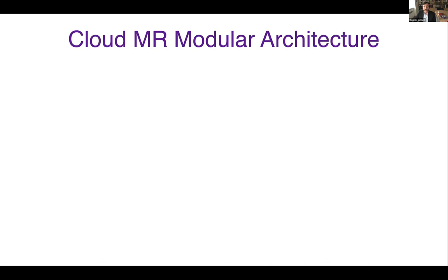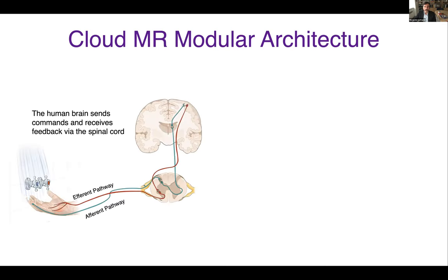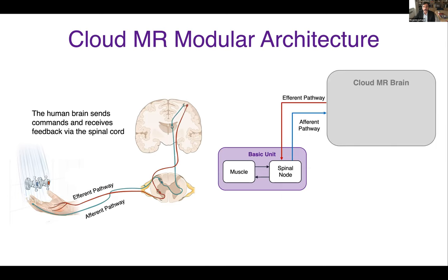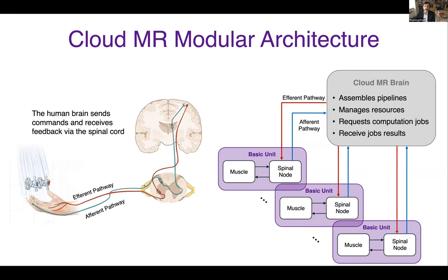One of the specifications was to have a modular software architecture, and we're not software engineers, so we looked for inspiration. We decided to copy the nervous system, in which the human brain sends commands and receives feedback via the spinal cord. The afferent path tells the hand to adjust the temperature of the water, and the efferent path tells the brain whether the water is too hot or too cold. Similarly, we designed CloudMR to have a brain, which can run a request down the spinal cord to assign a job to a specific muscle. The muscle lets the brain know if the job succeeded and what the results are. CloudMR has multiple basic computational units, and based on what the user requests, the brain assembles a pipeline of tasks which require basic units to complete the job.